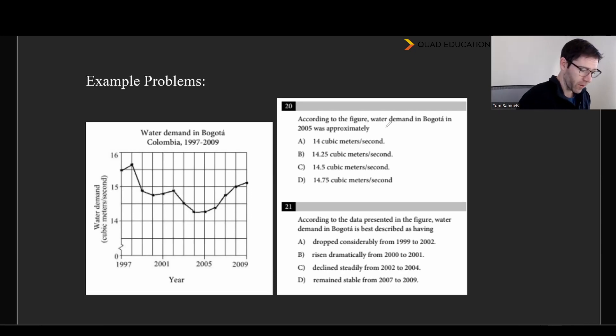Okay, let's take a look. According to the figure, water demand in Bogota in 2005 was about what? And so we go to 2005 and we're seeing it right in there. And you need to be careful with respect to the units because here we have 14 and a half. And so this is going to be halfway between 14 and 14 and a half. That's 14 and a quarter.